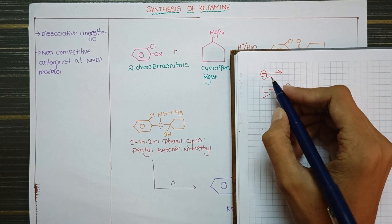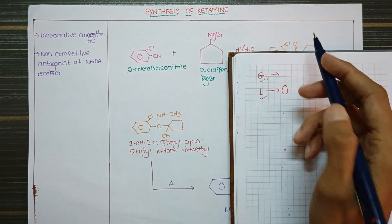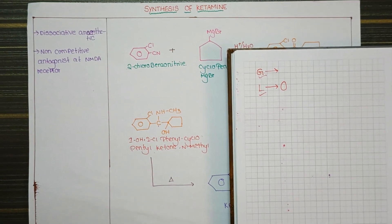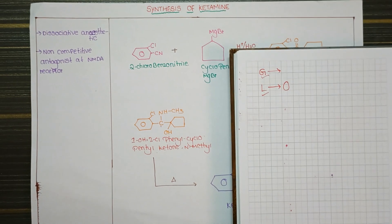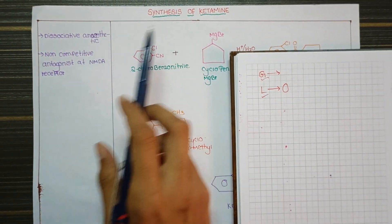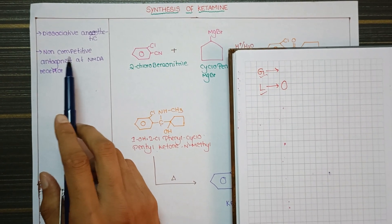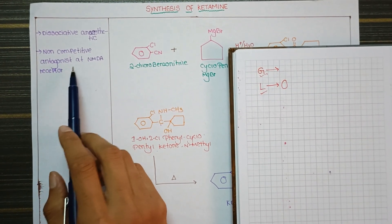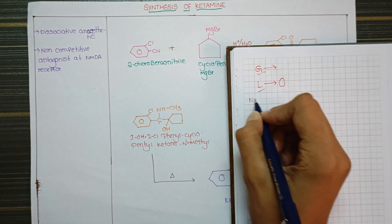Ketamine comes under general anesthetics. Below general anesthetics, ketamine is a dissociative anesthetic, and the mechanism of action of ketamine is non-competitive antagonist of NMDA receptors.